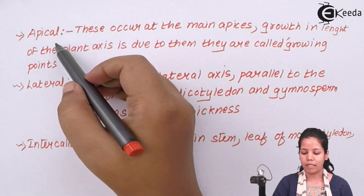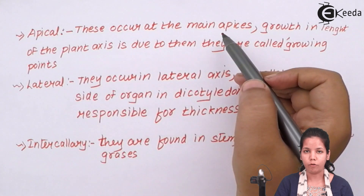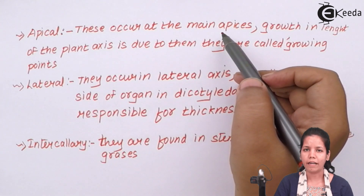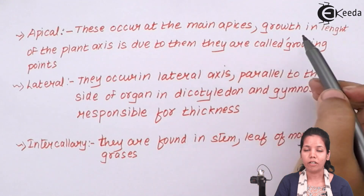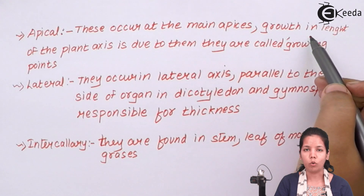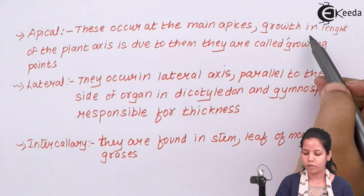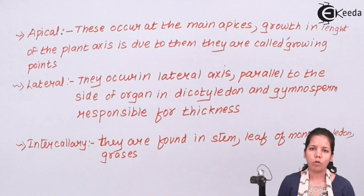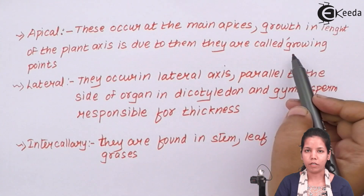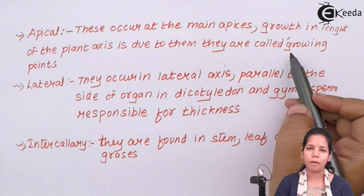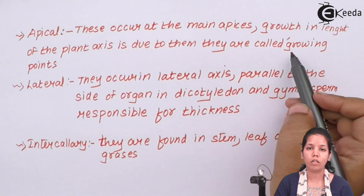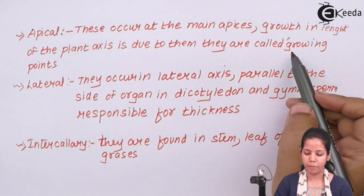When we talk about apical meristem, these tissues are basically formed at the apex, the head region, or the main axis region of the plant. They are responsible for the growth or lengthwise increase in a plant, which is why they are also termed as growing points — the regions responsible for the longitudinal growth of a plant.